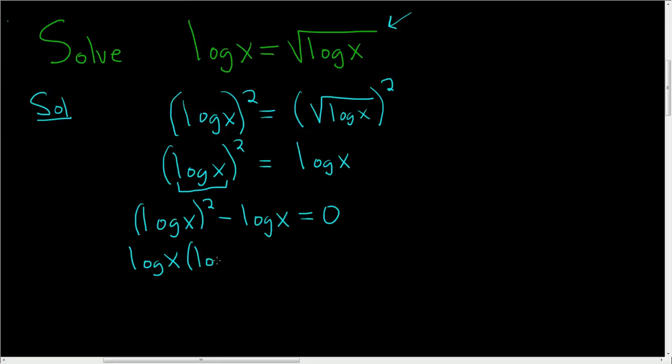Here we get log x(log x - 1) = 0, and that checks - log x times log x is (log x)², and log x times minus 1 is minus log x. We have a product equal to 0, so we can set each factor equal to 0. So log x = 0, or log x - 1 = 0.